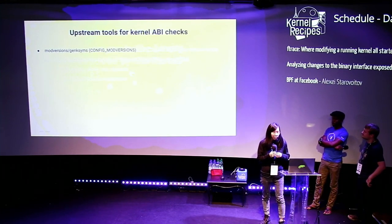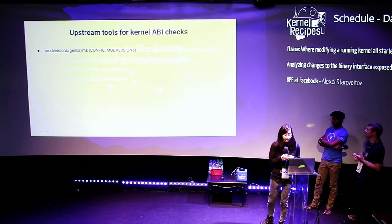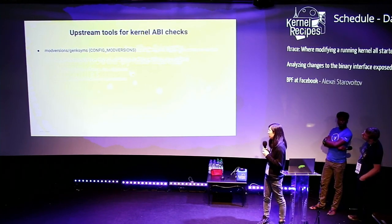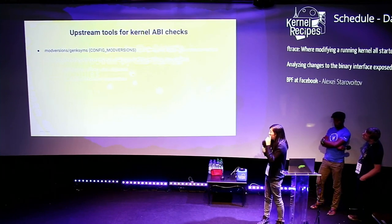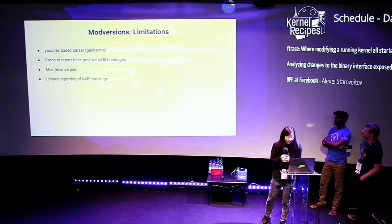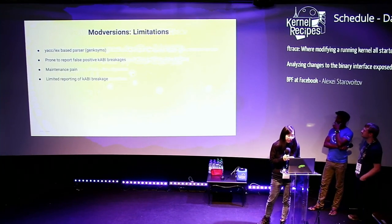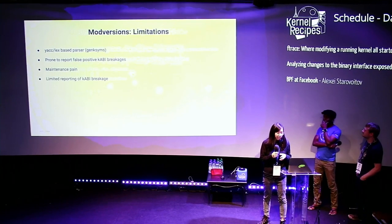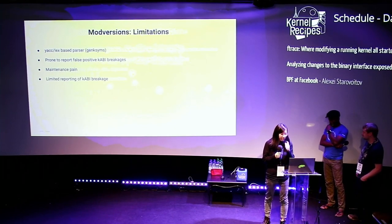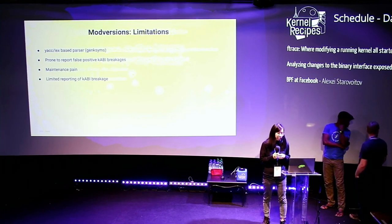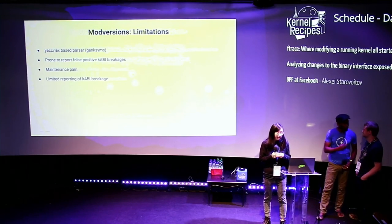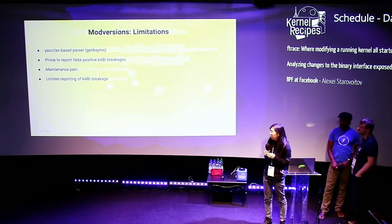Let me go over what existing upstream tools we have for kernel ABI checks. Most distributions rely heavily on the configuration option called ModVersions, which relies on a program called GenKSims that produces symbol versioning information. But ModVersions is known to have certain limitations. GenKSims is a Yacc/Lex-based parser that's prone to reporting false positive KABI breakages, is sometimes a maintenance pain, and has pretty limited reporting of when a KABI breakage occurs.